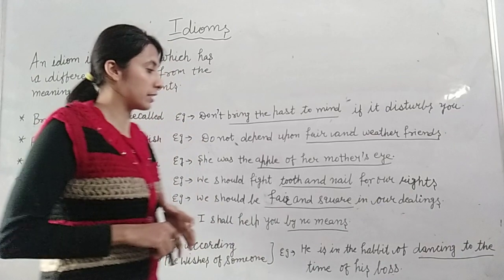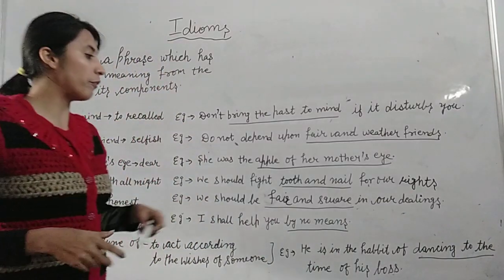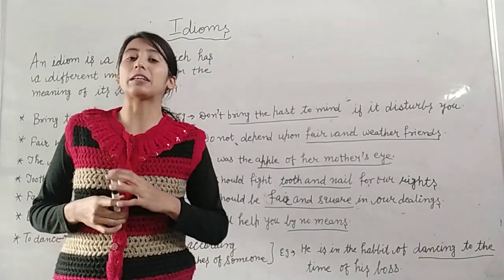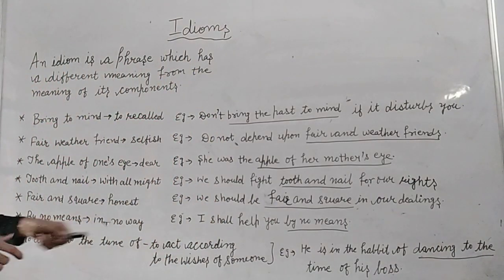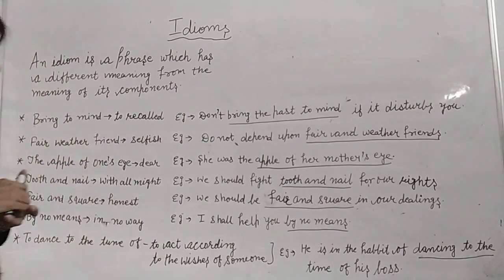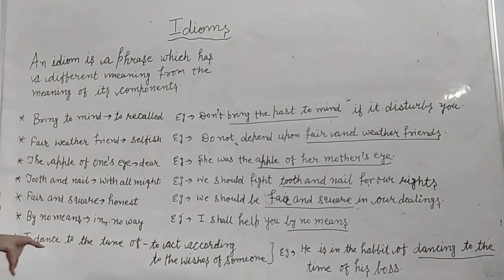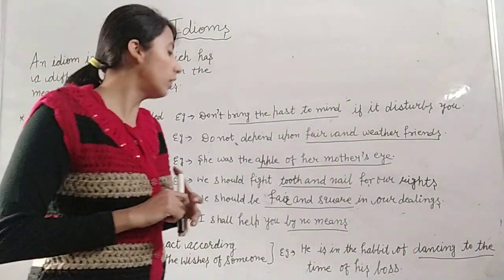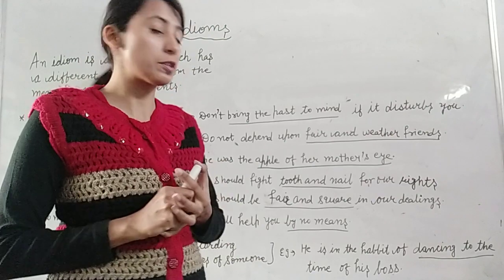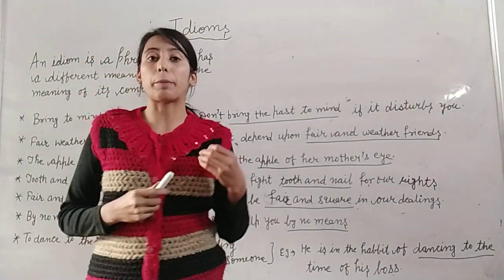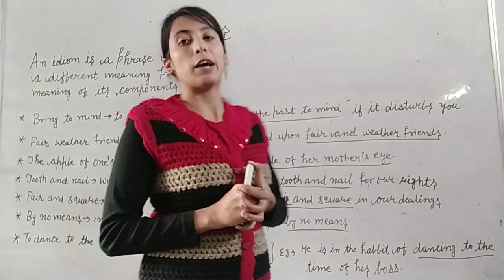Fair and square means honest — we should be fair and square in our dealings, अपनी dealings के साथ हमेशा fair and square रहना चाहिए, means honest रहना चाहिए. By no means means in no way — I shall help you by no means, किसी भी तरीके से नहीं. To dance to the tune of means to act according to the wishes of someone — He is in the habit of dancing to the tune of his boss, अपने boss की wishes के according. तो ये थे आपके कुछ idioms.